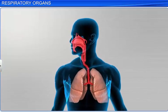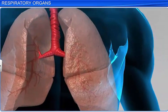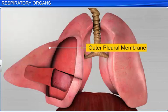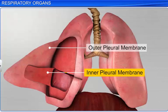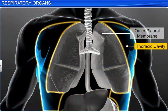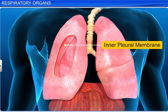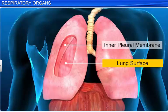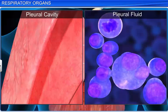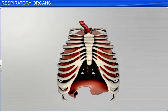The lobes are spongy and elastic organs, with broad bottoms and tapering tops. Each lung is enclosed by two membranes: the outer pleural membrane and the inner pleural membrane. The outer pleural membrane is in close contact with the thoracic lining, whereas the inner pleural membrane is in contact with the lung's surface. The membranes enclose a space called the pleural cavity, that contains pleural fluid. Pleural fluid reduces friction on the lung's surface when the lungs expand and contract.